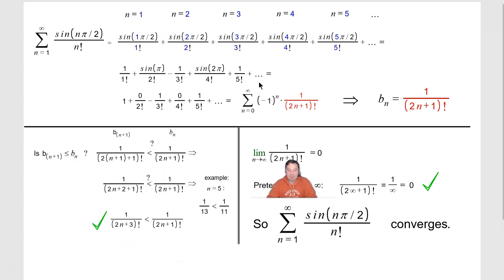Next part, I want to check whether the b sub n actually converges or not. So I have the limit as n approaches positive infinity of 1 over 2n plus 1 factorial. That is equal to 0. There's a reason for that. Basically pretend that n is infinite. You would have 1 over 2 times infinity plus 1 in factorial. That's basically still infinity. So 1 over infinity is 0.